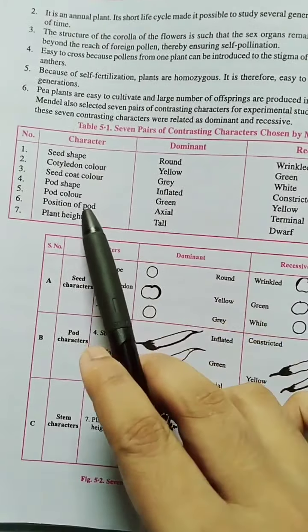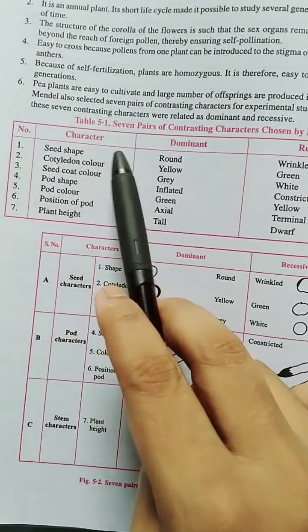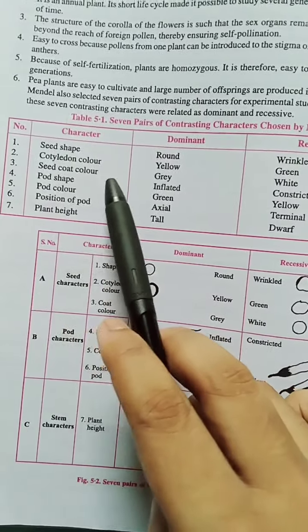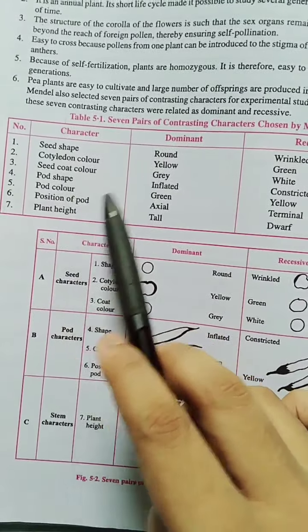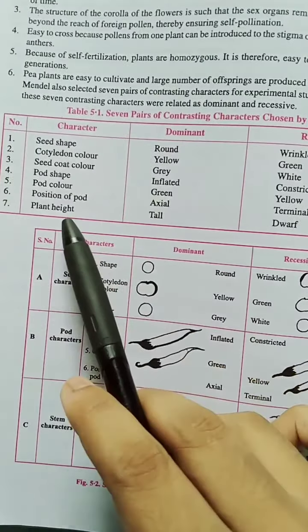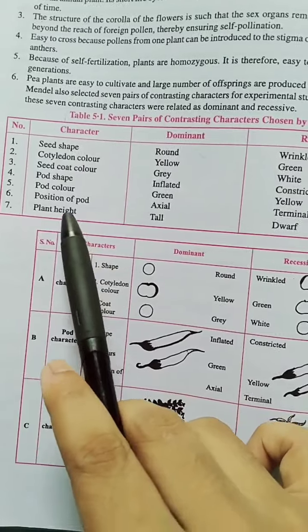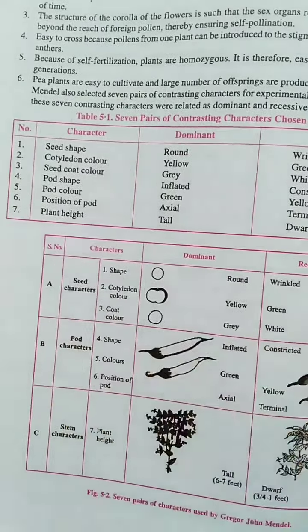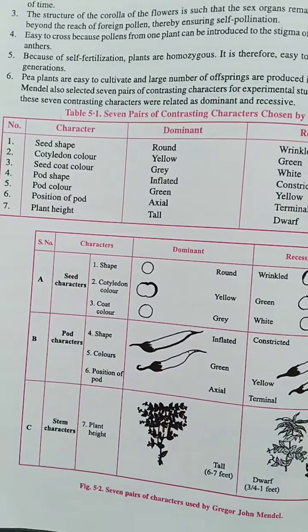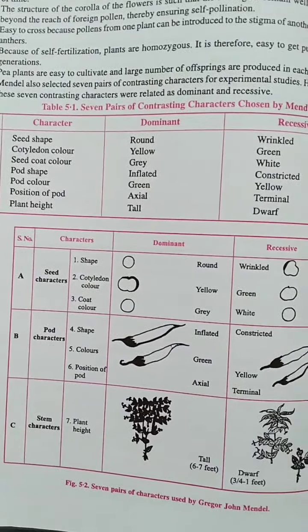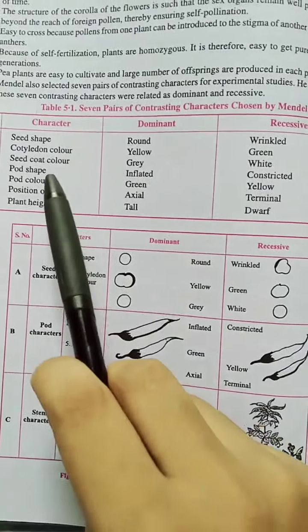The seven characters are: seed shape, cotyledon color, seed coat color, pod shape, pod color, position of the pod, and plant height. Plant height is very important — when we first look at Mendel's experiment, we will see the experiment on plant height.